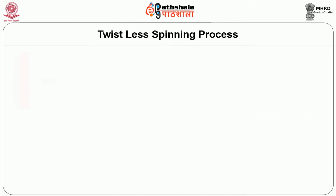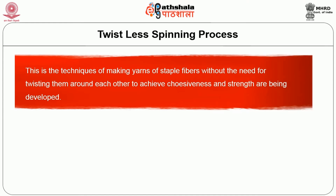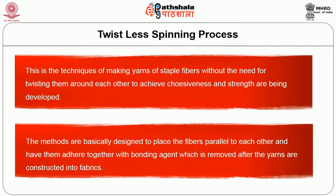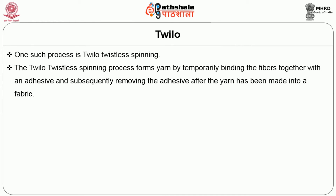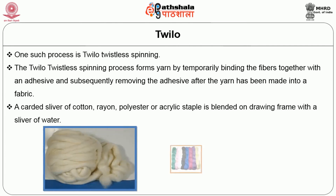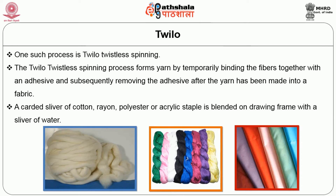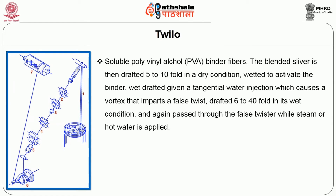Next is the twistless spinning process — a technique of making yarns of staple fibers without the need of twisting them around each other to achieve cohesiveness and strength. The methods are designed to place the fibers parallel to each other and have them adhere together with a bonding agent which is removed after the yarns are constructed into fabrics. One such process is the Twillow twistless spinning process, which forms yarn by temporarily binding the fibers together with an adhesive and subsequently removing the adhesive after the yarn has been made into fabric. A carded sliver of cotton, rayon, polyester or acrylic staple is blended on a drawing frame with a sliver of water-soluble PVA binder fibers. The blended sliver is then drafted 5 to 10 fold in dry condition, wetted to activate the binder, wet drafted, given a tangential water injection which causes a vortex that imparts a false twist, drafted 6 to 40 fold in wet condition and again passed through the false twister while steam or hot water is applied.